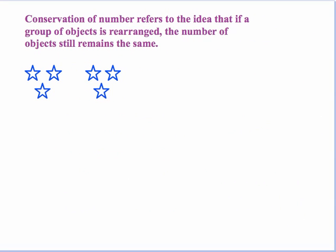Just a little bit of review. The conservation of number refers to the idea that if a group of objects is rearranged, the number of objects still remains the same. So if I started off with two sets of three like I have here, I could rearrange them to a set of four and a set of two, but I've still got the same amount. Nothing changed other than the positions.